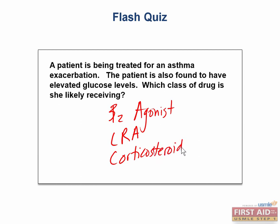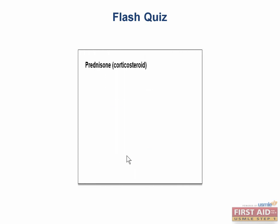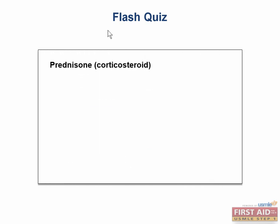Here are some of the common asthma medications. Which one do you think she's likely receiving? She is likely receiving a corticosteroid such as prednisone. Out of all of the common asthma medications, only the corticosteroids will cause a marked increase in blood sugar as one of their side effects. This is why corticosteroids are oftentimes contraindicated in diabetic patients, because we don't want to elevate their blood glucose levels.